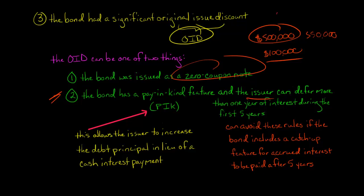So when there's a pay-in-kind feature, and the issuer has the option where they can defer more than one year of interest during the first five years of the bond, if they could defer, whether they do or not, if they could defer more than one year of interest during the first five years, then we say, okay, there is a significant original issue discount on this bond.